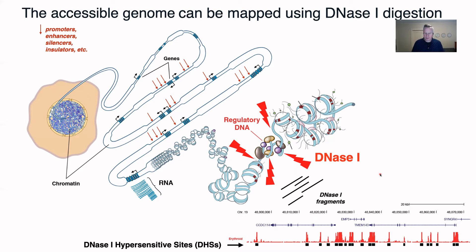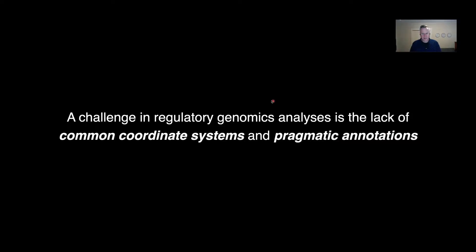These regions are often indicative of regulatory DNA. The problem is that even though you can do this for an individual cell type, in general in regulatory genomics we simply don't have any kind of common coordinate system, let alone a pragmatic notation to further analyze these elements. This is quite a difference from the world of genome annotation, which is way ahead of regulatory genomics in that sense.